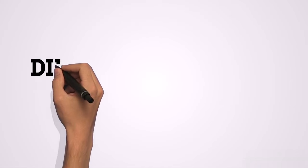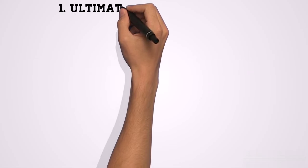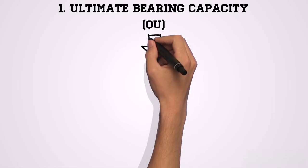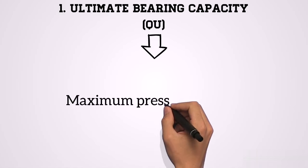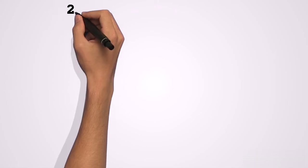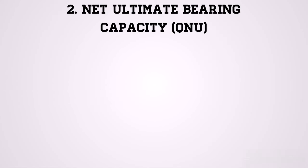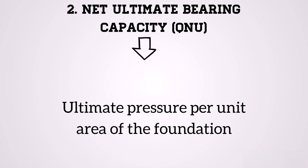There are different types of bearing capacity to consider. The first is ultimate bearing capacity. The ultimate bearing capacity of soil, designated as QU, is the maximum pressure the soil can support without failure occurring. The second is net ultimate bearing capacity, which is the ultimate pressure per unit area of the foundation that can be supported by the soil in excess of the pressure caused by the surrounding soil at the foundation level.